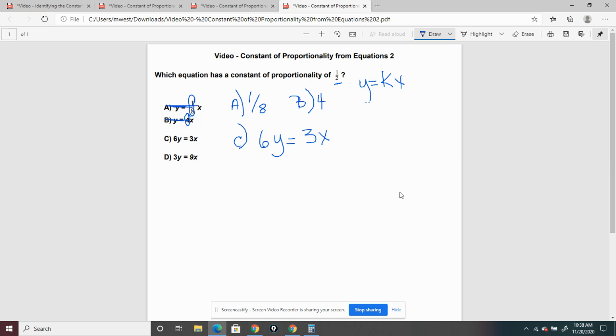So in this instance here, we're going to isolate the y so that we can form our equation. So we're going to divide both sides by 6. 6 divided by 6 is 1, so both of those will cancel out.